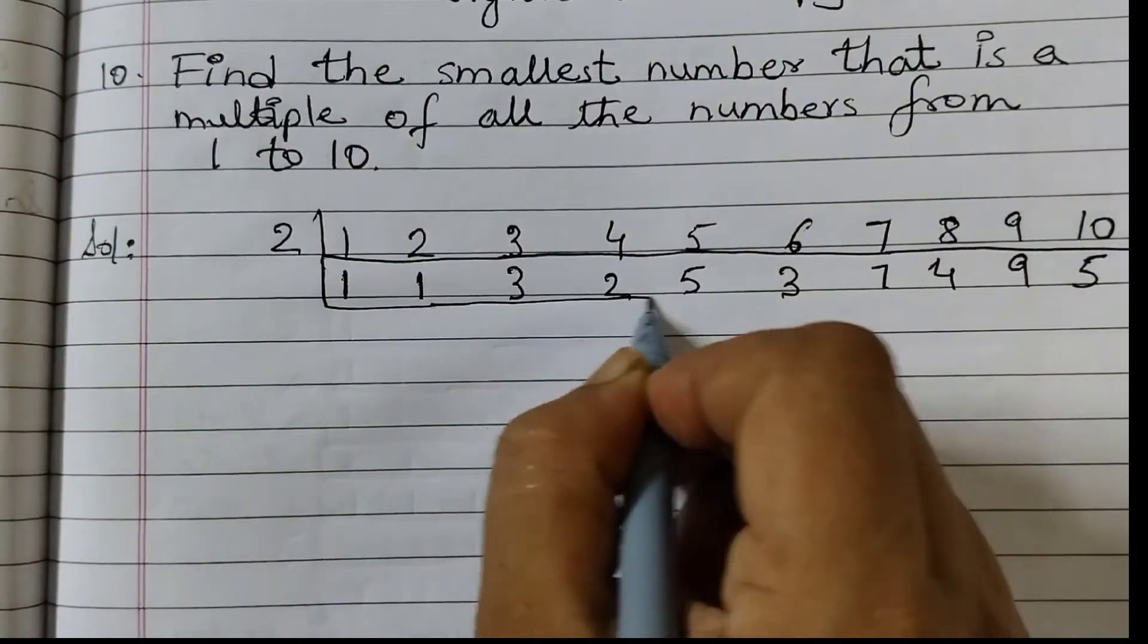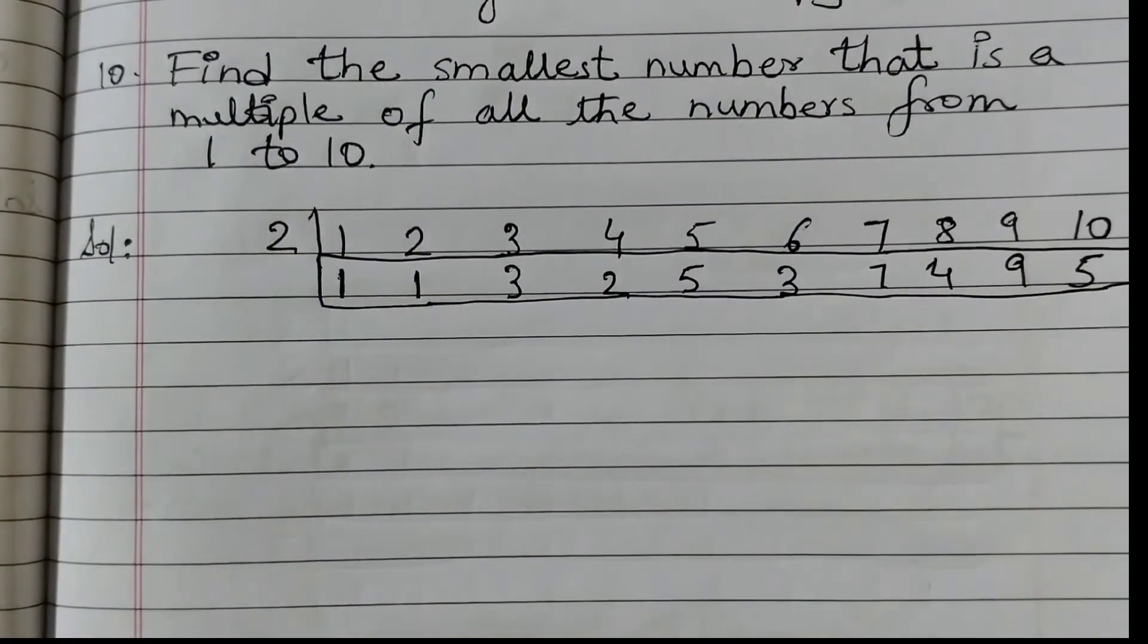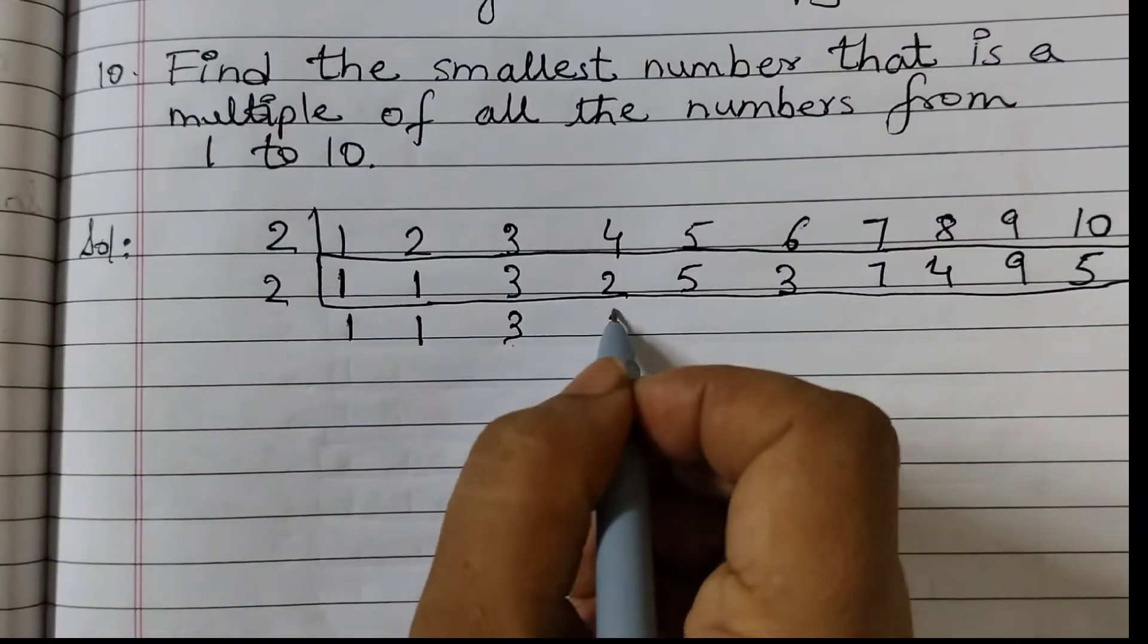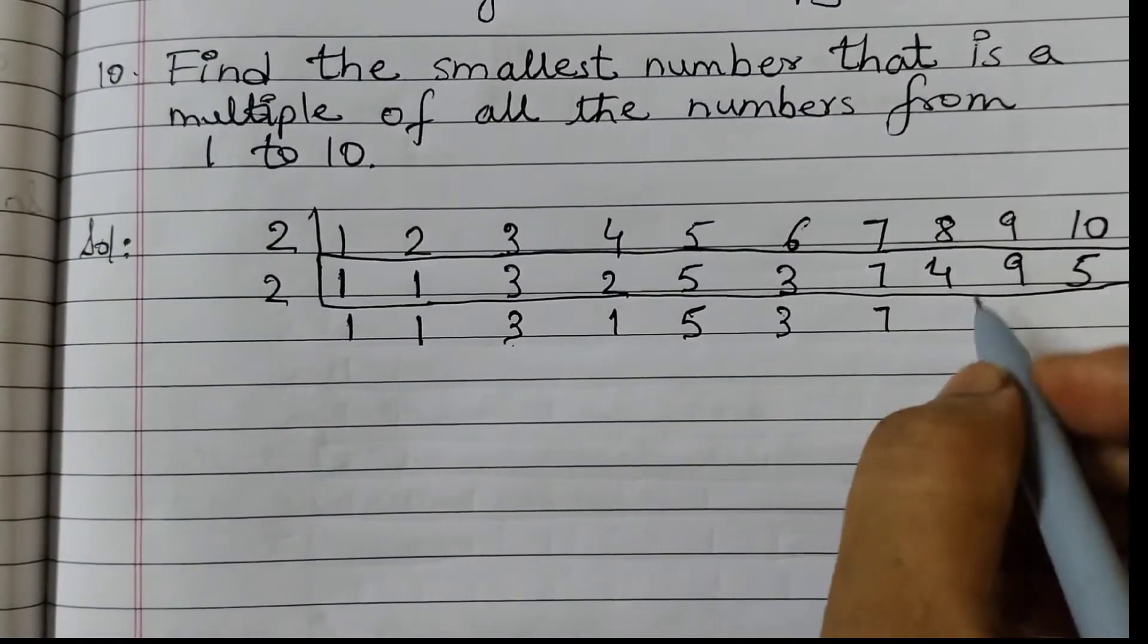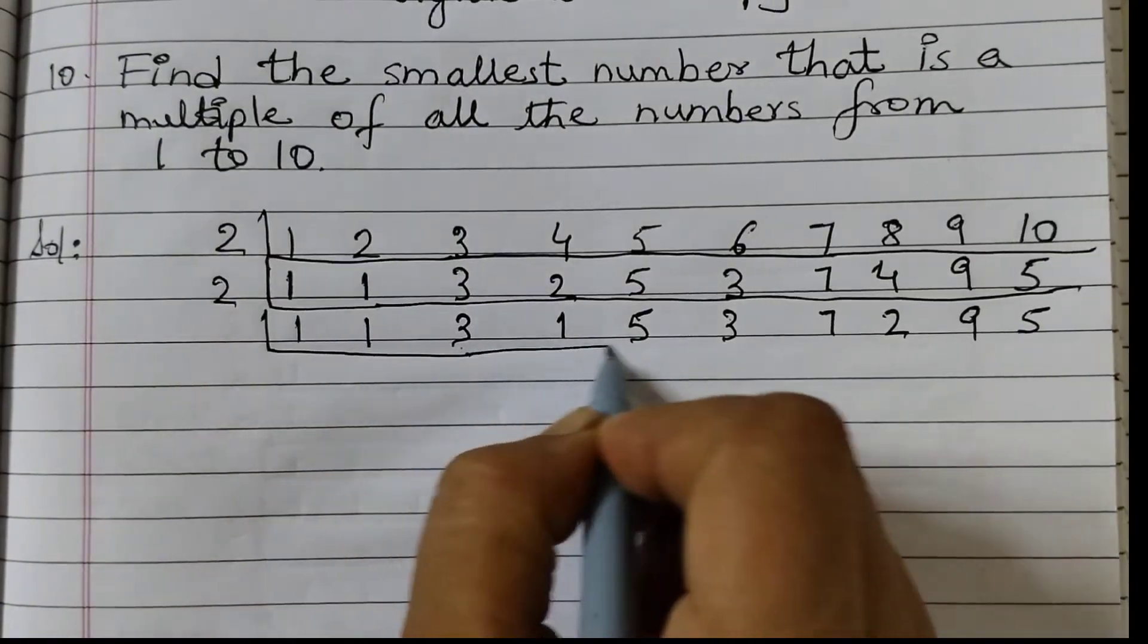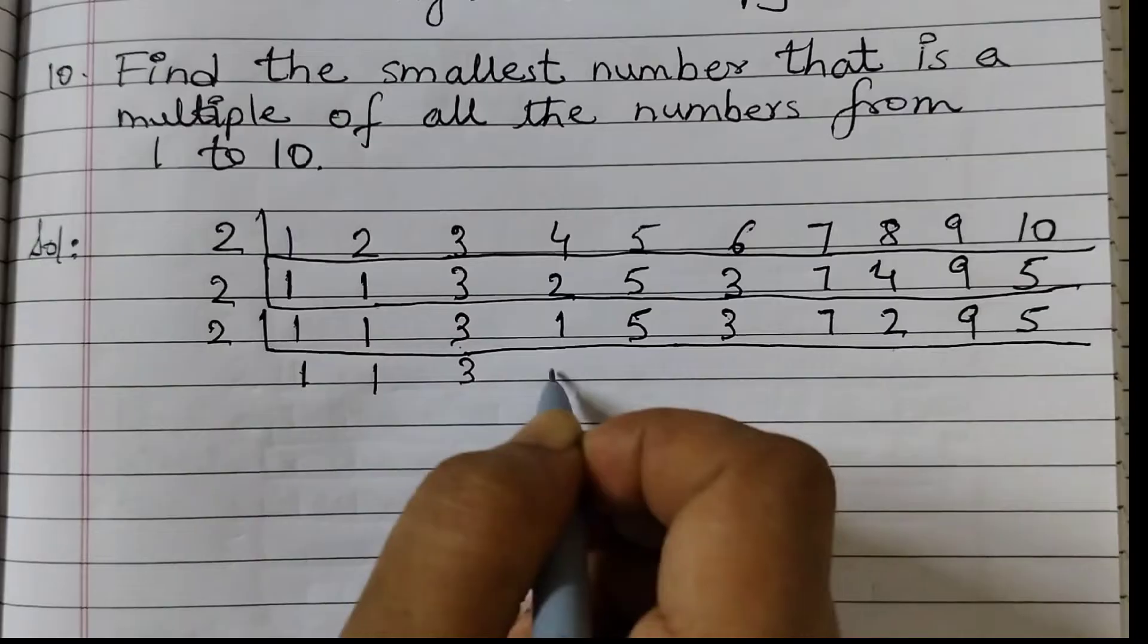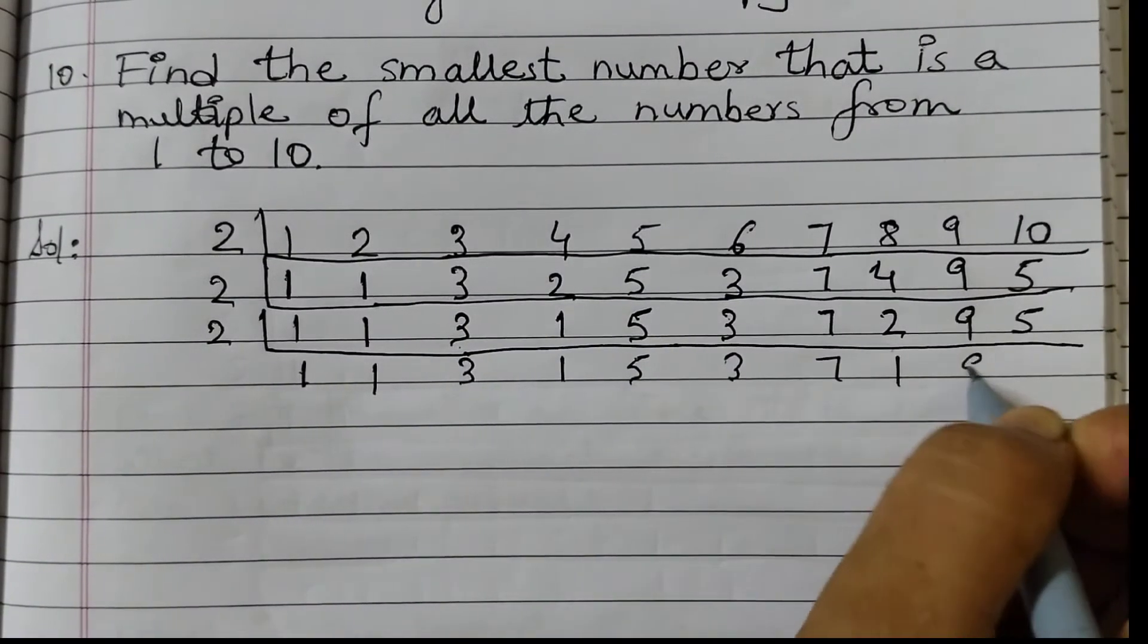Next again we will divide by 2. We will go on dividing by 2 till we have no multiples of 2. So 2, 1 as it is comes down. If the number is not divisible it will just come down as it is. 2 1's are 2, 5, 3 is not divisible, 7, 2 2's are 4, 9, 5. Now we have 2 here so again we will divide by 2. 1, 1, 3, 1, 5, 3, 7, 2 1's are 2, 9, 5.